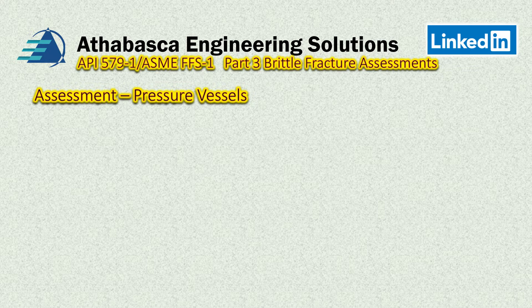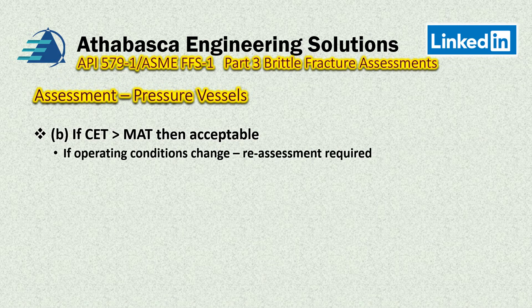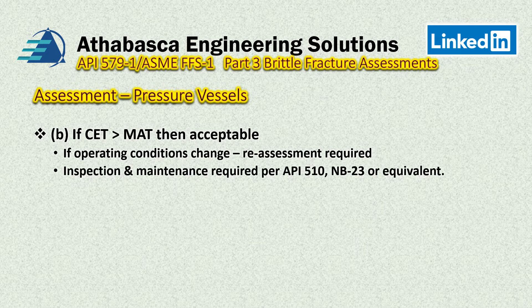API 579.1 reminds us that our goal is to ensure that our CET is greater than our MAT, and the process requirements are greater than the temperature for the material of each component we're examining. So if the operating conditions change, then a reassessment is required. These assessments are all based upon inspection and maintenance as per API 510 or B23, which we may do some videos on in the future — let me know if you're interested.